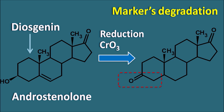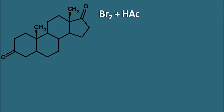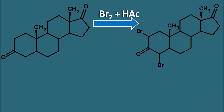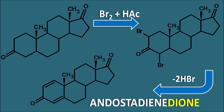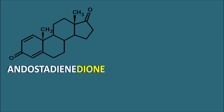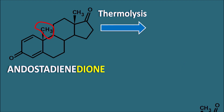With one ketone now present, we have to introduce double bonds. This intermediate is reacted with bromine and acetic acid, undergoing alpha-bromination on both sides of the ketone. These bromine groups are then removed, eliminating two molecules of HBr and introducing two double bonds. The resulting intermediate is androstadienedione, which has two double bonds and two ketone groups with an androstane nucleus. This androstadienedione undergoes thermolysis, removing the methyl group at the 19th position and simultaneously forming an aromatic ring to produce estrone.